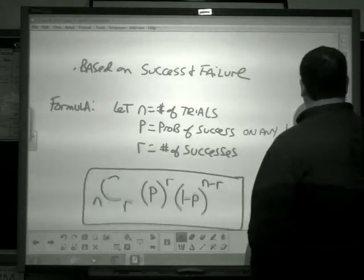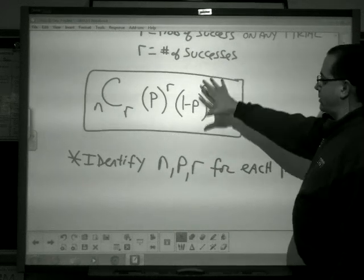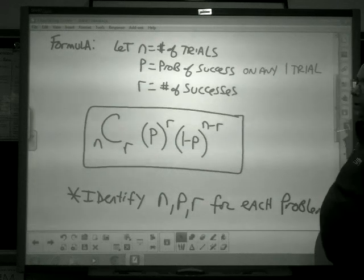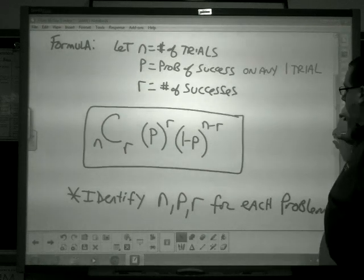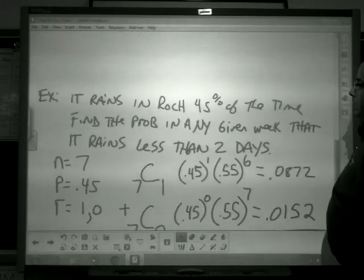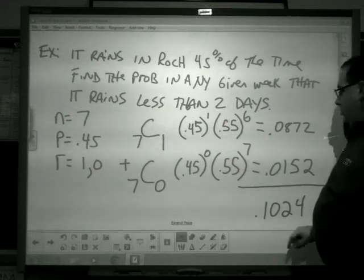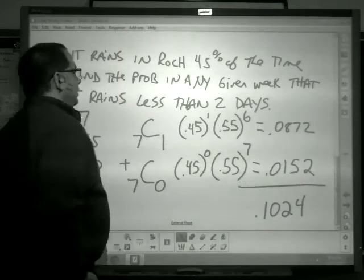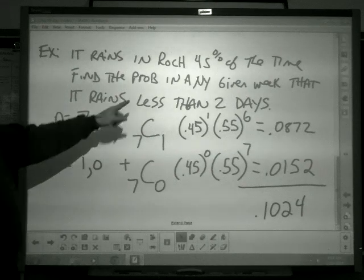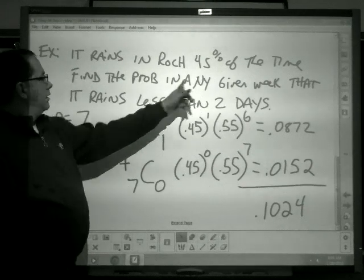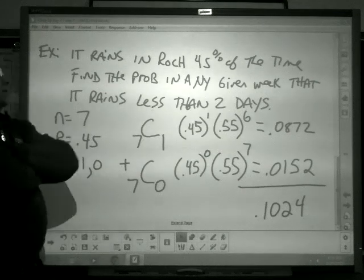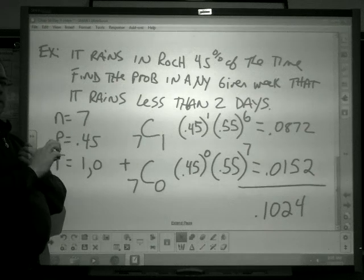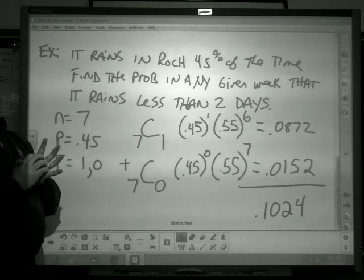Let's put one example here in our notes. For each of these questions, you need to identify what the n, the P, and the R is for each problem first. That's part of getting full credit when you do the problems, part of organizing yourself. Here's an example: If it rains in Rochester 45% of the time, find the probability in any given week that it rains less than two days.